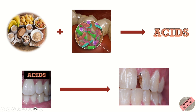If left untreated, the decay can progress deeper into the tooth, reaching the dentine and eventually the pulp. At this stage, the tooth becomes more sensitive and painful as the nerves in the pulp are affected. In severe cases, the infection can lead to abscess formation or tooth loss. Dental caries is a dental condition caused by bacterial infection and the breakdown of tooth structure, leading to cavities and potential tooth damage if left untreated.